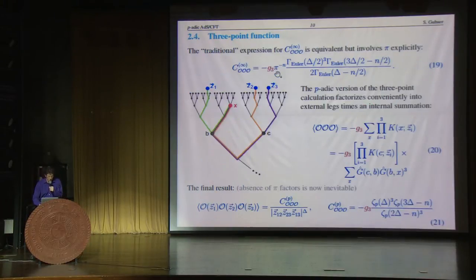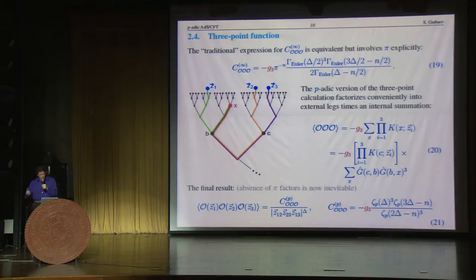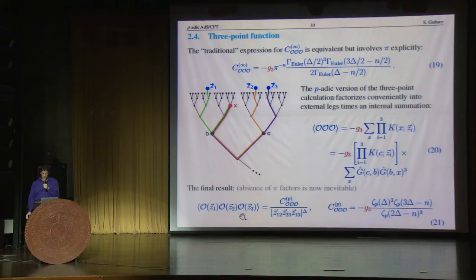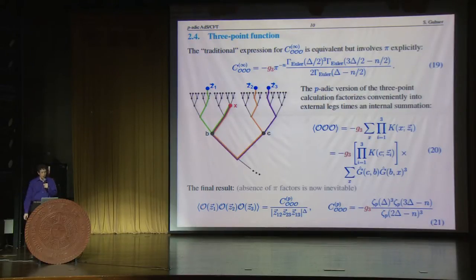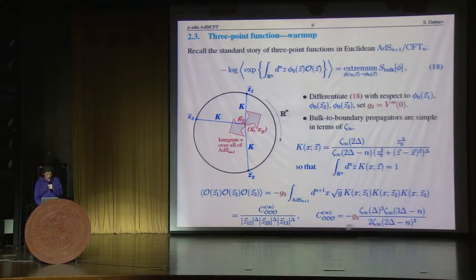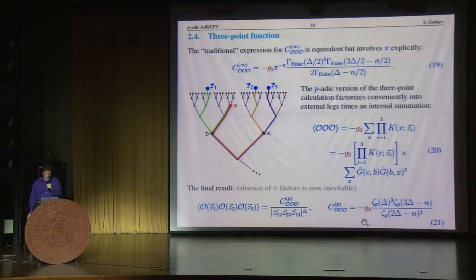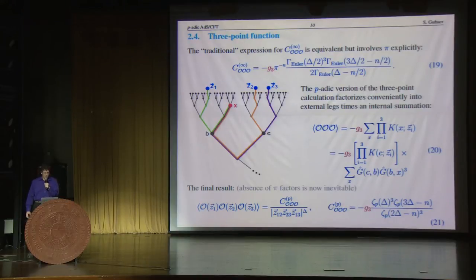I like this expression for this coefficient C because it doesn't involve the transcendental number pi. And in fact, if we simply replace infinity by p, we wind up with the correct answer for the three-point function of a p-adic field theory. So in other words, we can continue from the real case to the p-adic case as soon as we've written everything in terms of local zeta functions — in a surprisingly easy way, except for one little detail: here there's a factor of two in the denominator, and here there's not. That's a bit of an embarrassment to us; we did not give any deep explanation for that discrepancy.